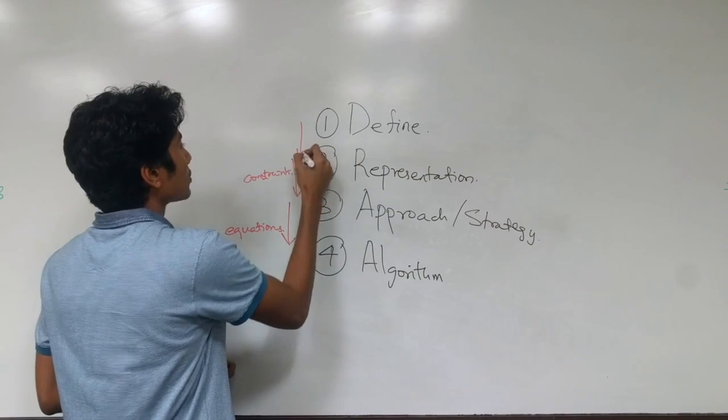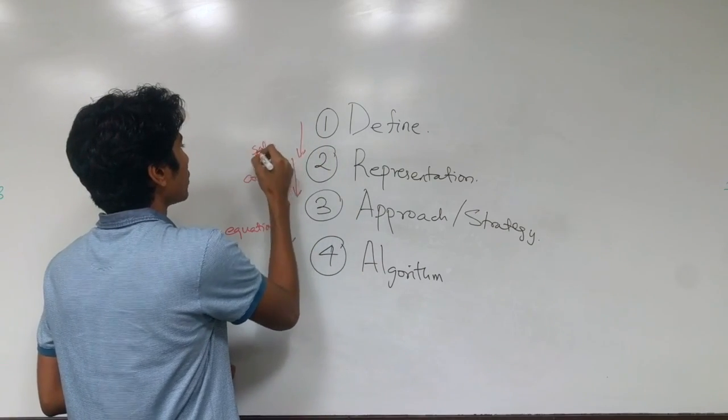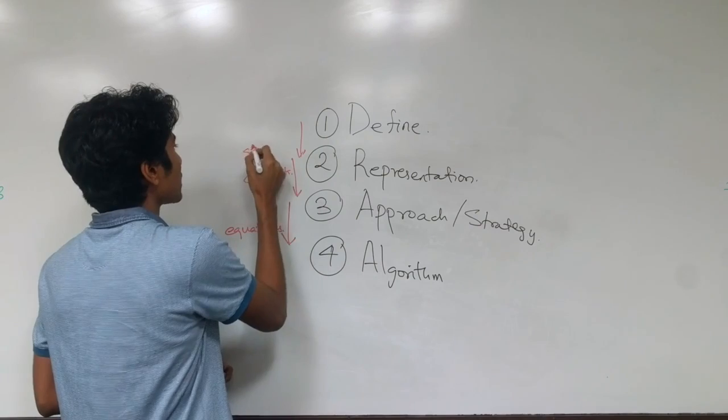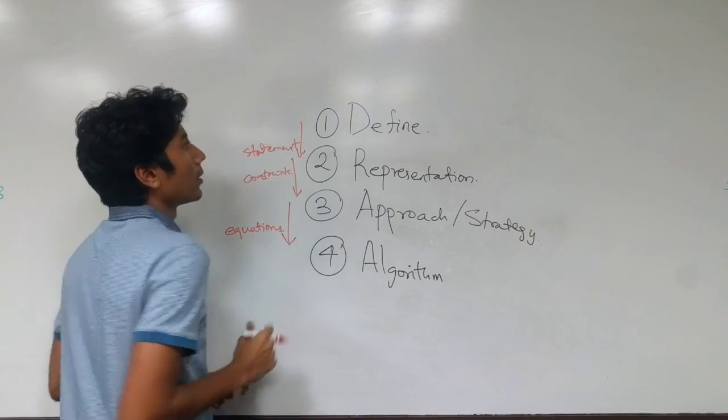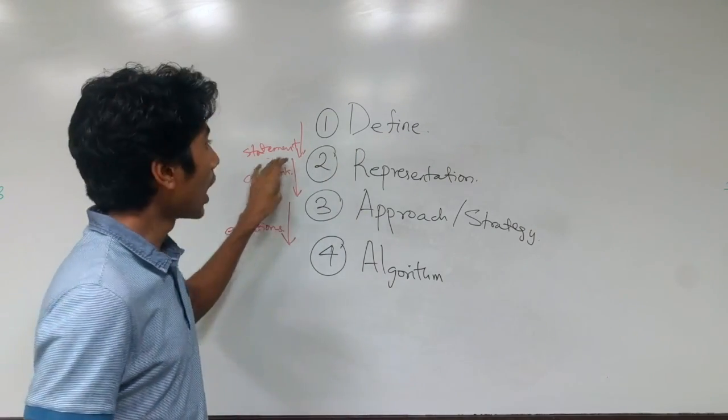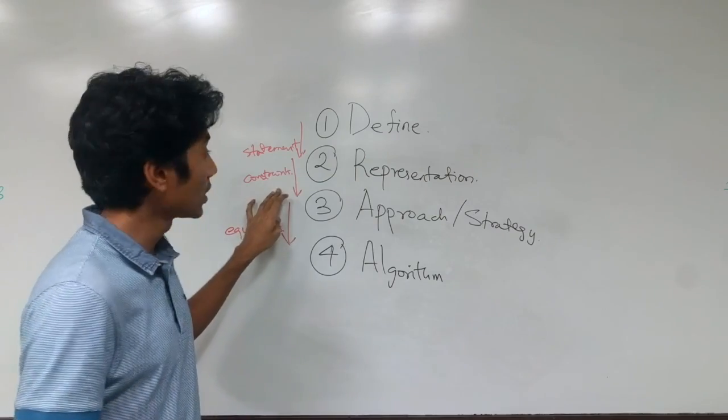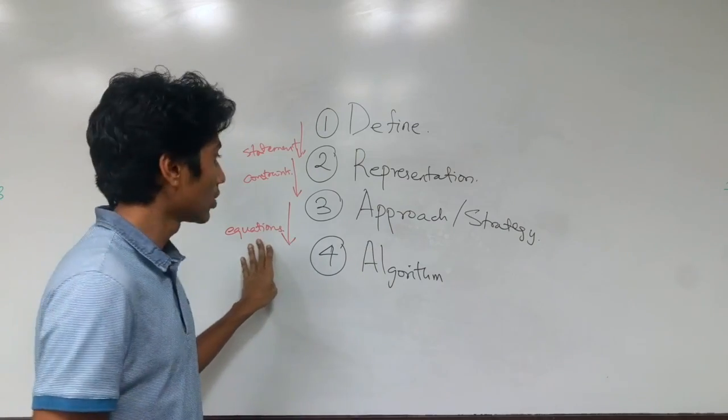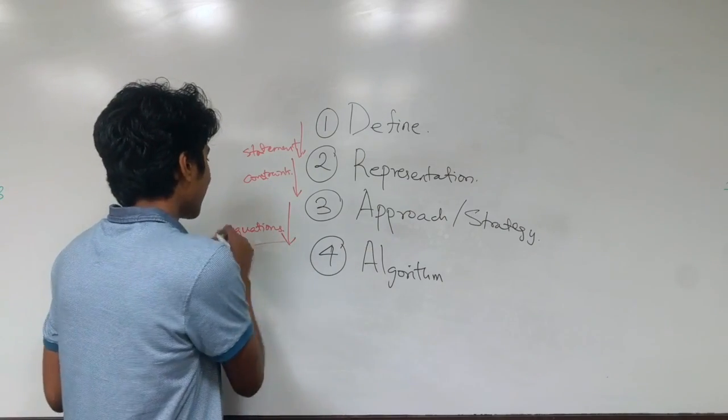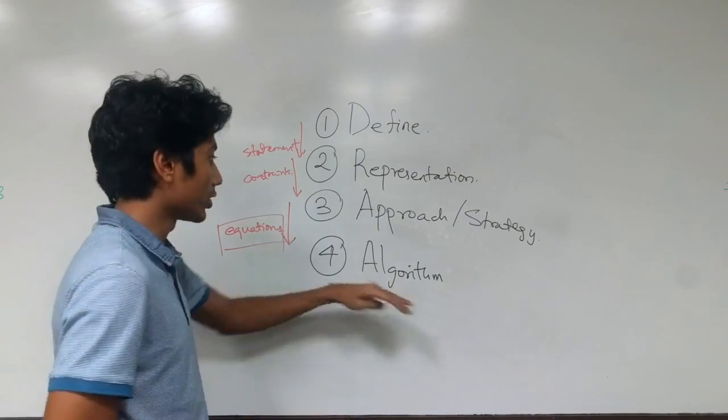Over here this has become a set of constraints and over here this has become a statement, a problem statement basically. After you define it you get a problem statement. After you represent it you get a set of constraints. After you apply an approach or a strategy you get a set of equations or a set of basically mathematical terms which you need to solve.